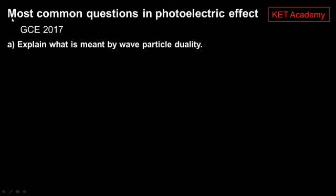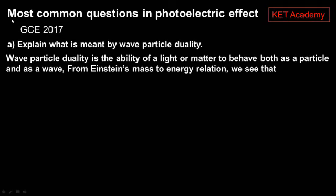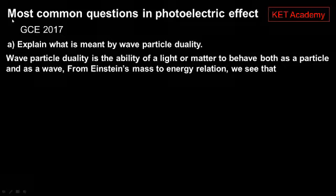Wave-particle duality is the ability of light or matter to behave both as a particle or as a wave. We see from the Einstein mass to energy relation that E equals MC squared, where M is mass and C is the speed of light.